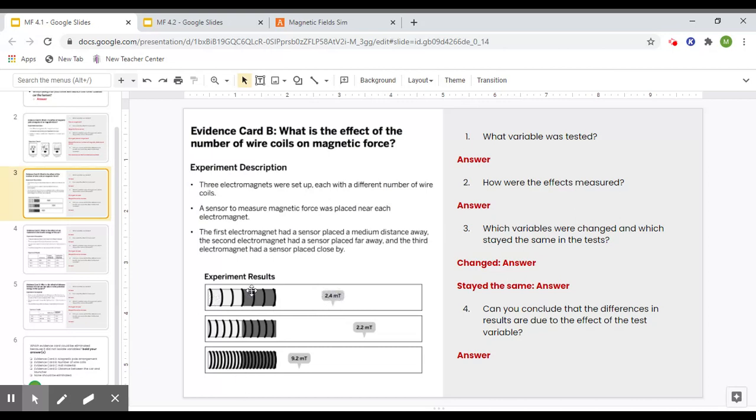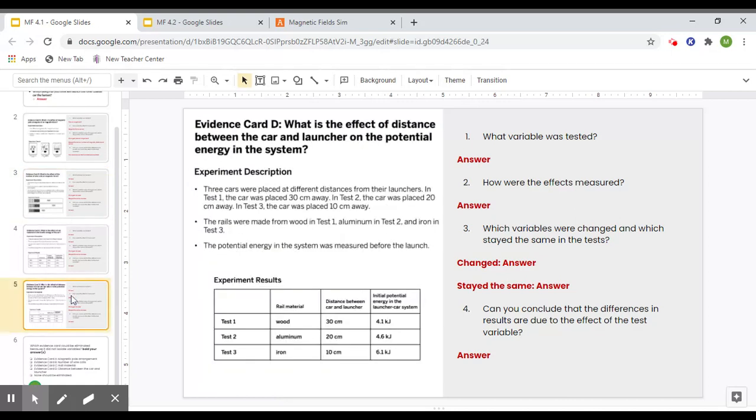If I want an accurate test and I want accurate results from different amount of coils, I would have the sensors lined up the same distance from the magnet in each test. So evidence card B is not valid, and also D.